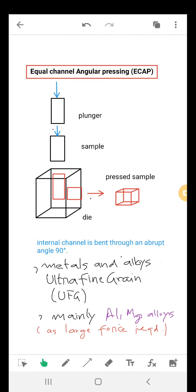The two channels intersect here, and in this way a rod-like sample is pressed through the die using a plunger, and shear deformation occurs.